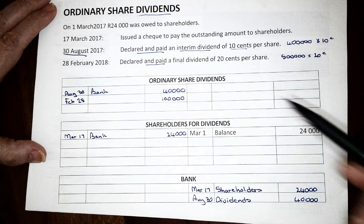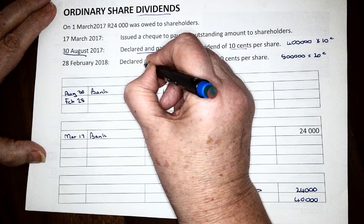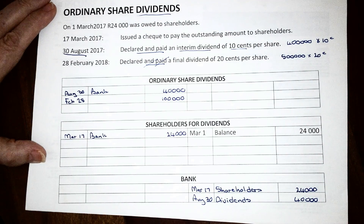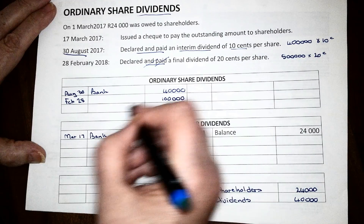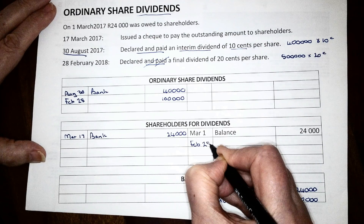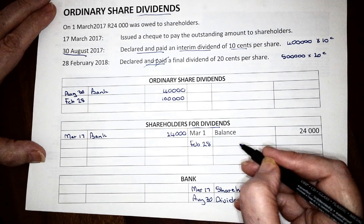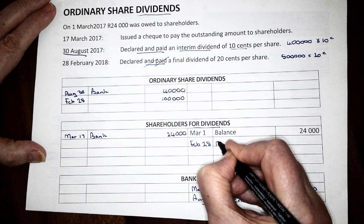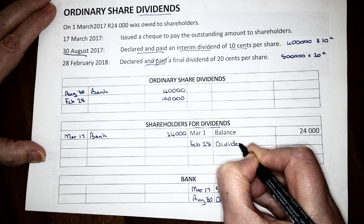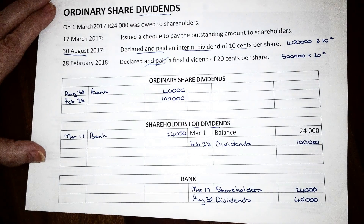If we change this and say on the 28th of February they declared a final dividend but didn't pay it, then we will show that this money is owed to the shareholders. The shareholders are the owners of the business, but we owe them money for dividends, so they are like a creditor at the end of the financial year. We will credit the shareholders for dividends with the total amount that must be paid to them in the next financial year.